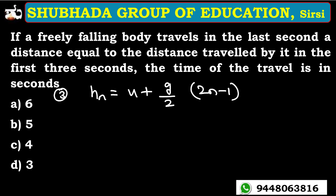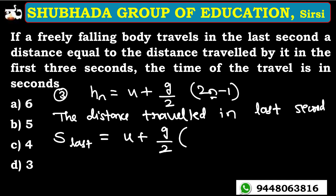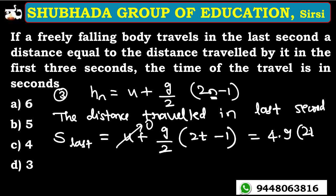Using this formula for the last second (the t-th second), with u equal to 0 for a freely falling body: distance in last second equals g divided by 2 into (2t minus 1), which is 4.9 into (2t minus 1). For the distance in the first 3 seconds: s3 equals half g into 3 squared, with g equal to 9.8, giving s3 equal to 44.1 meters.